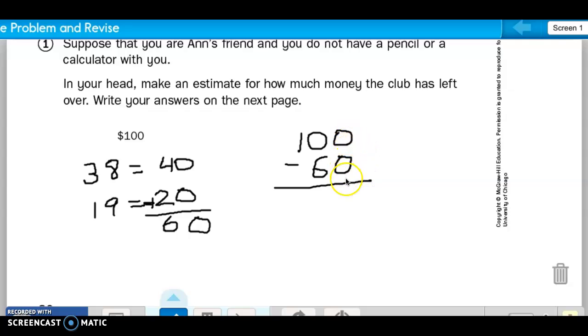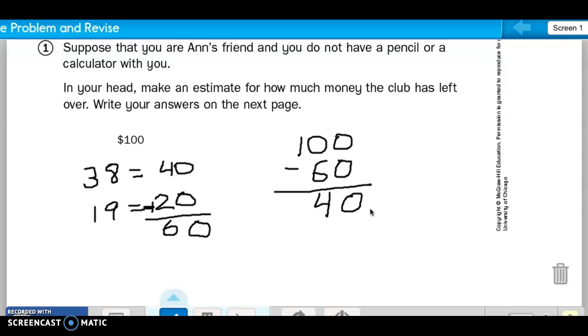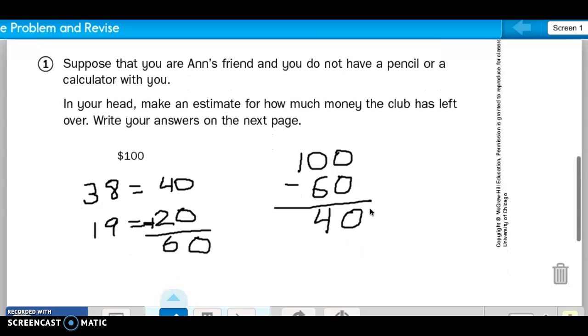0 minus 0 is 0, and 10 minus 6 is 4. So in my mind, I can think, without even using paper, I can estimate, and I can think, it's about $40. So she's left with about $40.